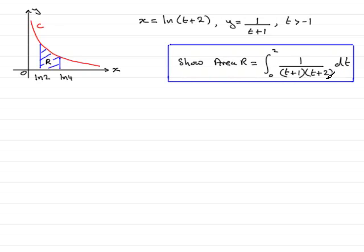So how do we do this? Well, first of all, you should know that the area bounded by the curve is always equal to the integral of y with respect to x, going between x equals, in this case, the natural log of 2 to the natural log of 4.